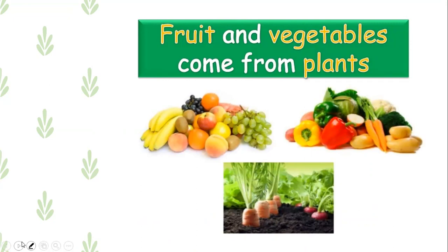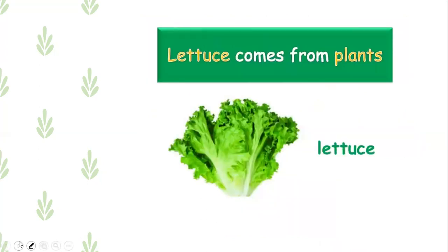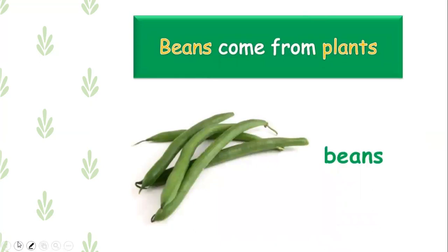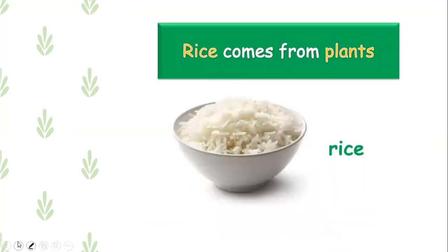Fruits and vegetables come from plants. الخضار والفواكه مصدرها النباتات. Lettuce comes from plants. Apples come from plants. Peas come from plants. Rice comes from plants. والأرز أيضاً مصدره plants.